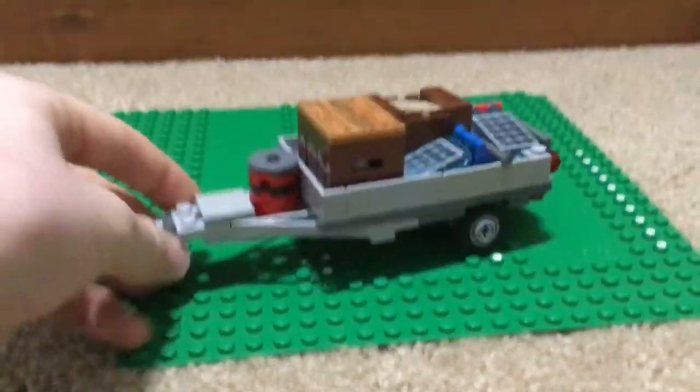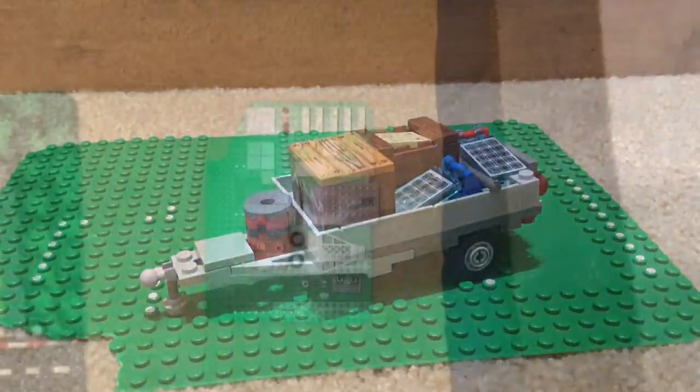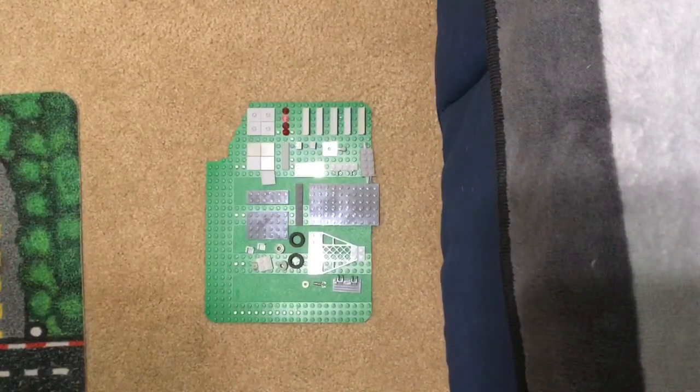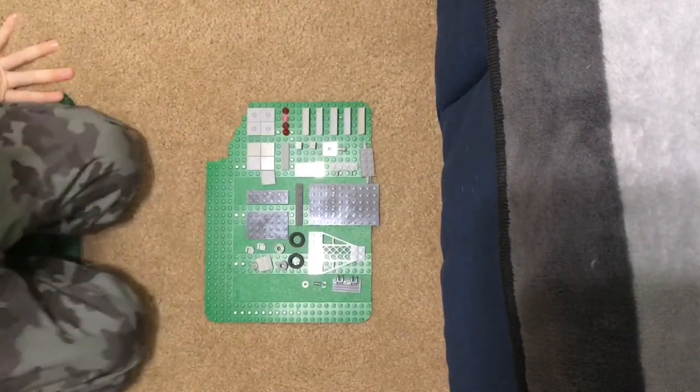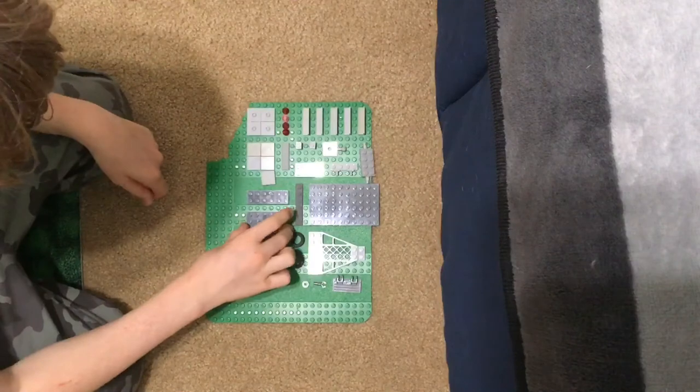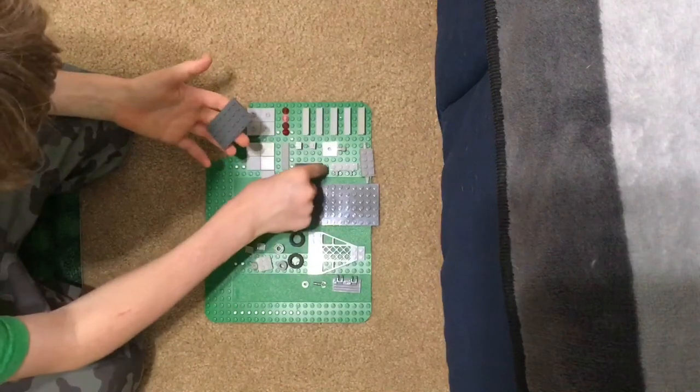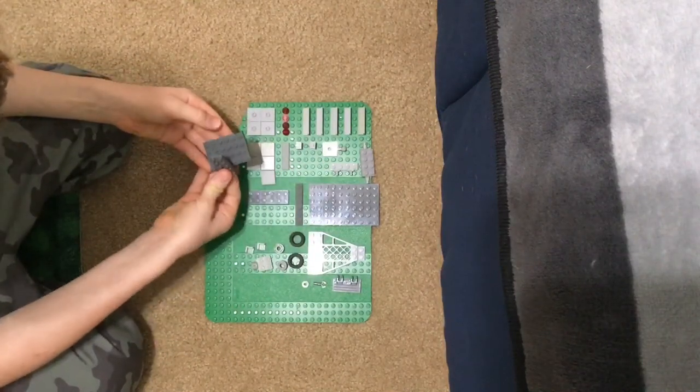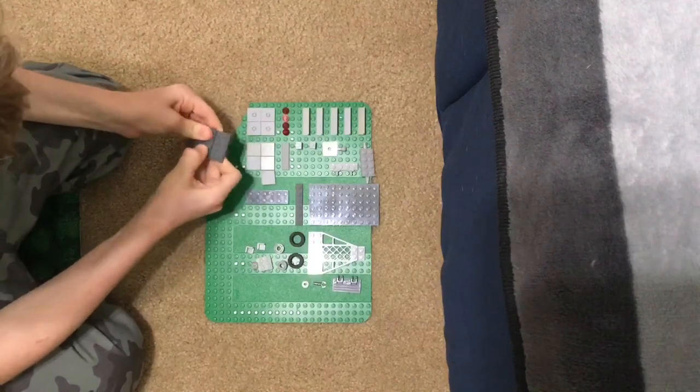But I'm going to show you how to build it and what pieces you'll need. So first, I'm going to show you how to build the trailer. These are the parts you'll need. So you want to start with a 6x4 dark gray plate and a 2x4 dark gray plate. Put it in the middle.